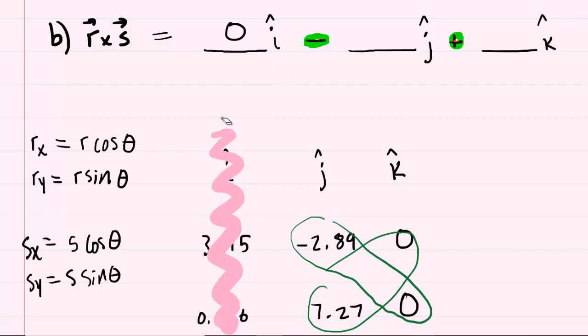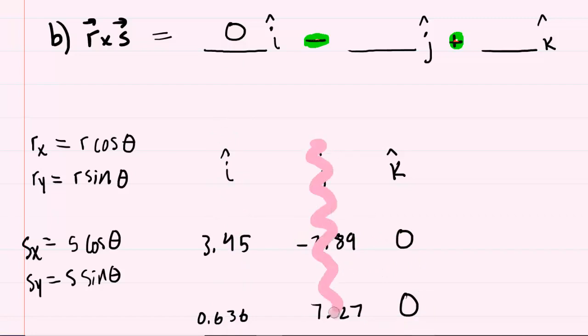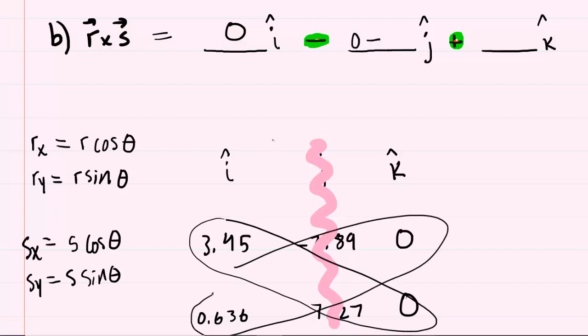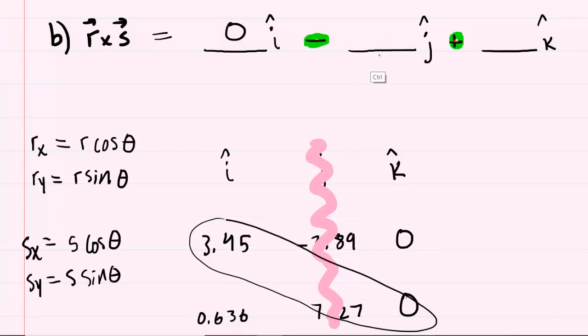Now, to fill in the space in the j-hat direction, you're going to cover up the j-hat portion of this table. And then you'll do that cross-multiplying determinant. So you're going to cross-multiply this way, which would give you zero, and then subtract what you would get by cross-multiplying that way, which is also zero. So once again, zero minus zero is zero. So the space in front of j-hat is going to just be zero.